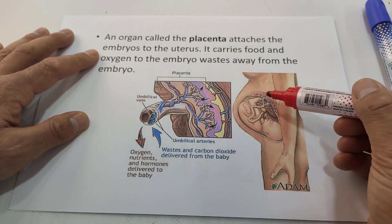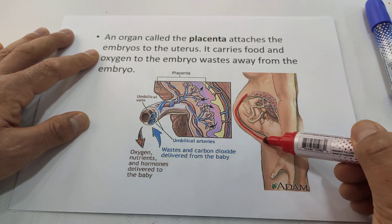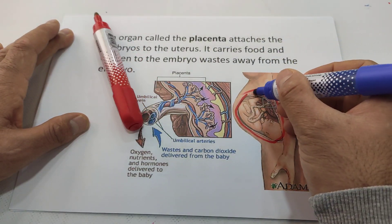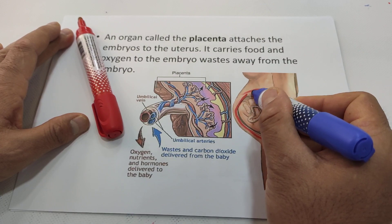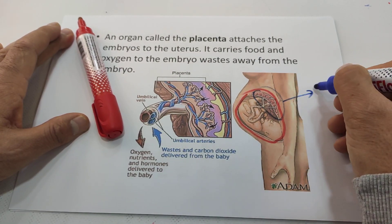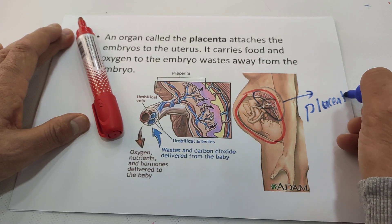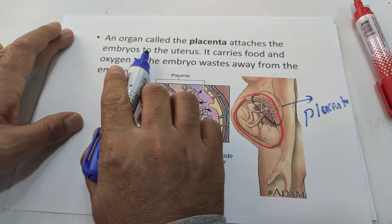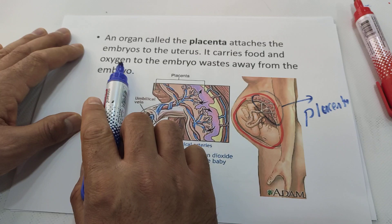This is the placenta, and this is the uterus. The placenta attaches the embryo to the uterus. It carries food and oxygen.